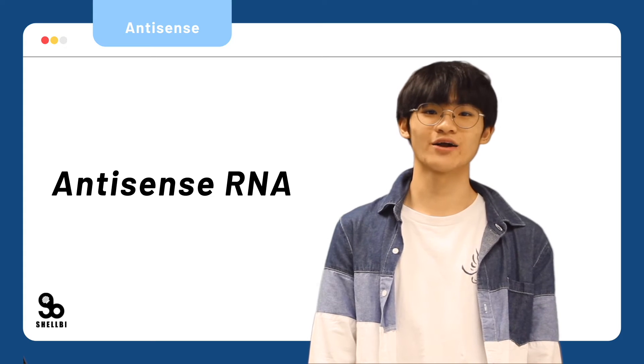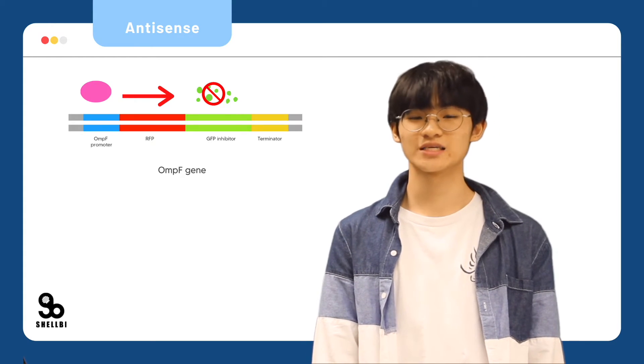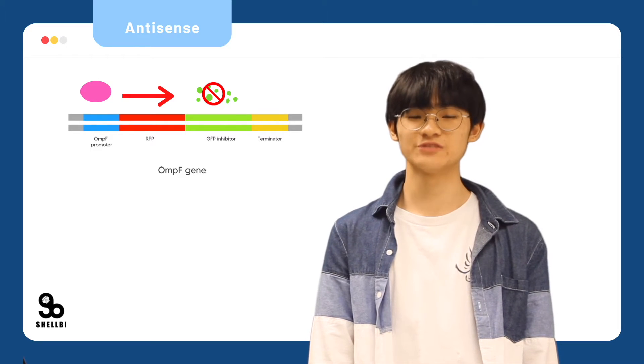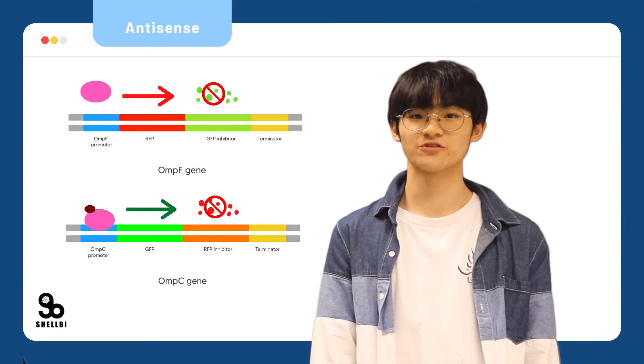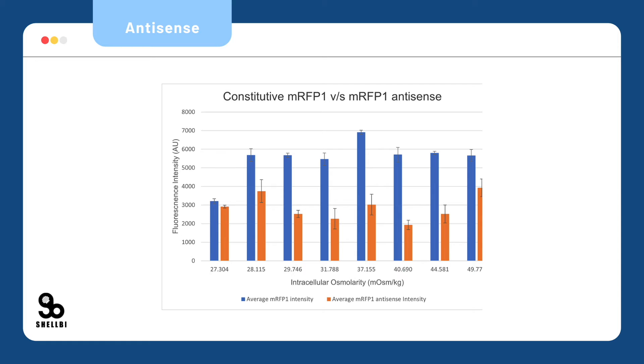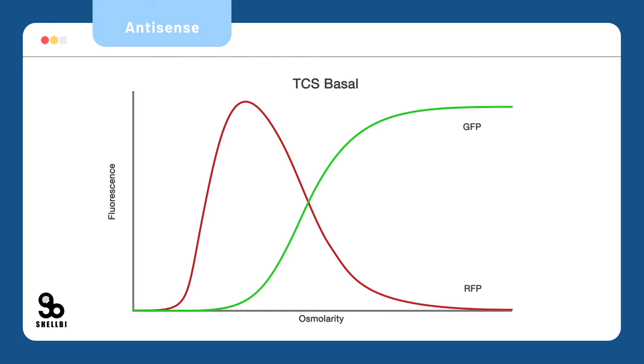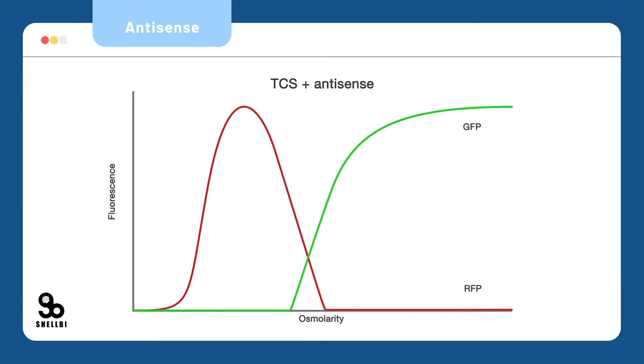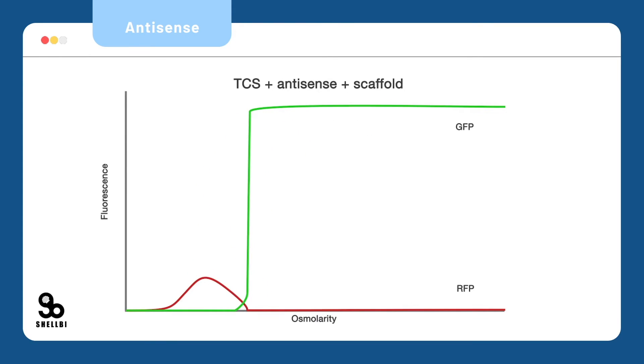We added antisense RNA to suppress background noise from the circuit. When red color is to be seen, the antisense RNA to green fluorophore will be expressed, suppressing any green color, and vice versa. After testing the efficiency of antisense molecules, we are sure that this mechanism could be beneficial in limiting false results in the biosensor. We can see a simulation via dry lab modeling of how antisense RNA could have minimized the overlap of the two colors, reducing mixed expression of the two fluorophores.